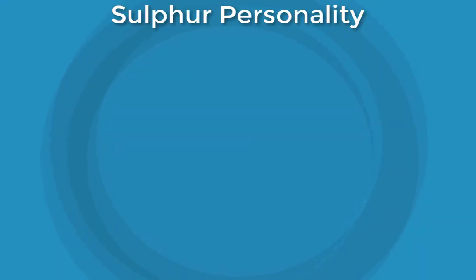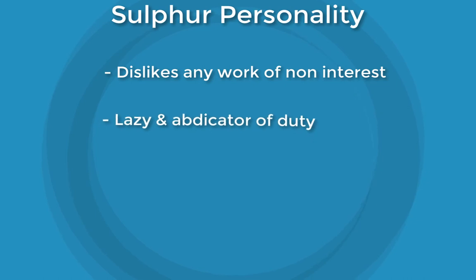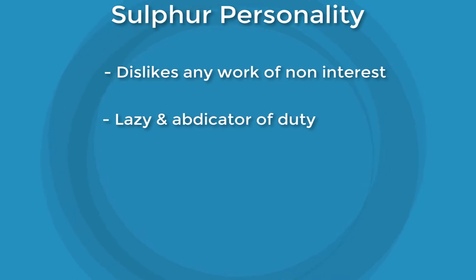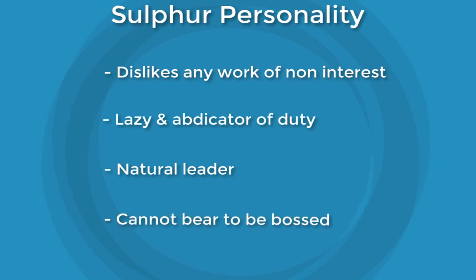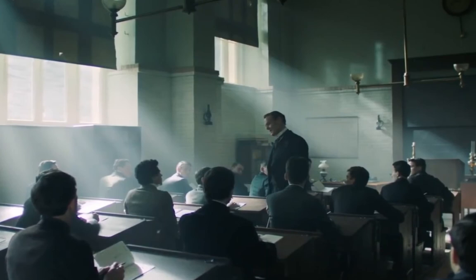The fearless and adventurous attitude combined with passion for what he wants to do makes Sulfur dislike any other work. Because of this, one may view Sulfur as lazy and an abdicator of duty. Sulfur will often justify laziness and abdication of duty by saying he is involved with more important matters, which usually means pursuing his pet interests. Those who feel he is lazy or irresponsible often try to discipline him. However, a strong trait of Sulfur is that he is a natural leader and cannot bear to be bossed. As a young child in school, Albert would not perform his duties in class or be attentive.